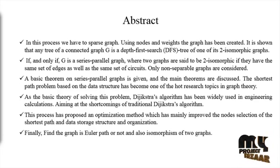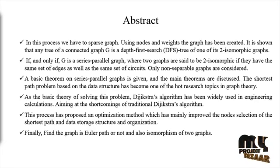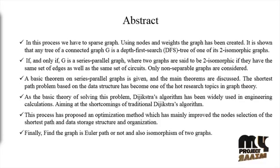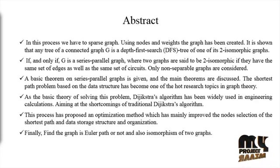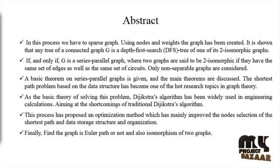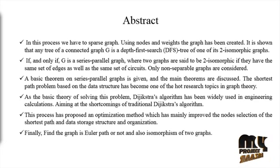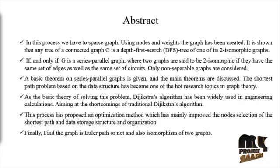The problem of finding the shortest path between two intersections on a roadmap may be modeled by the special case of shortest path problems in graphs. In this proposed work, we spare a graph using nodes and weights, the graph has been created. It is shown that any tree of a two-connected graph G is a depth-first search (DFS) tree of one of two isomorphic graphs.